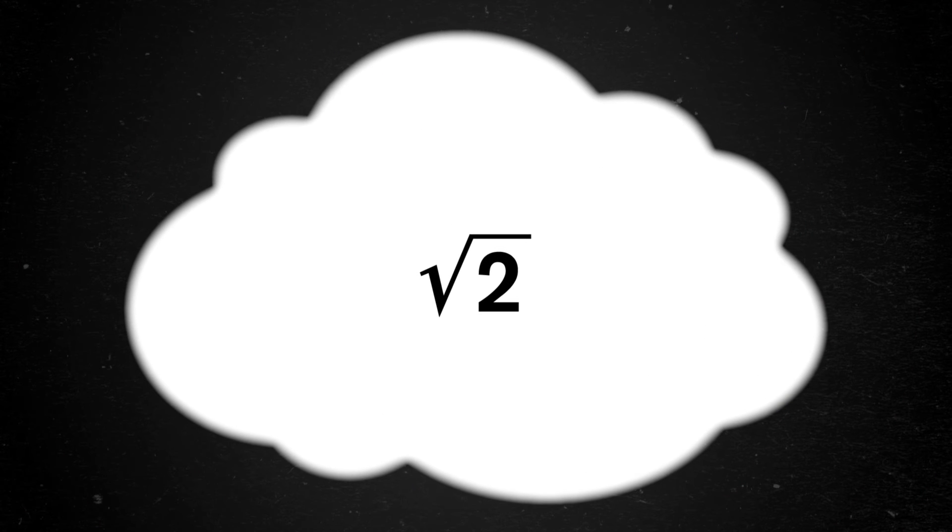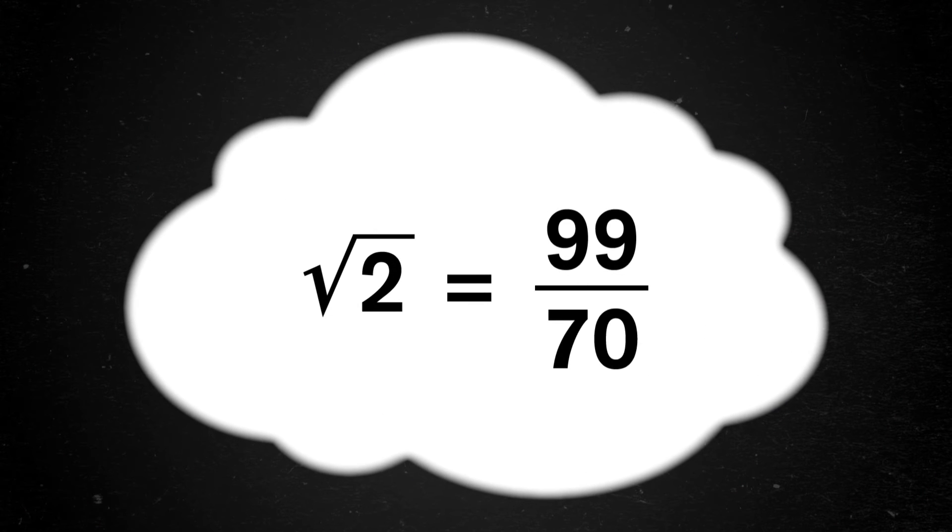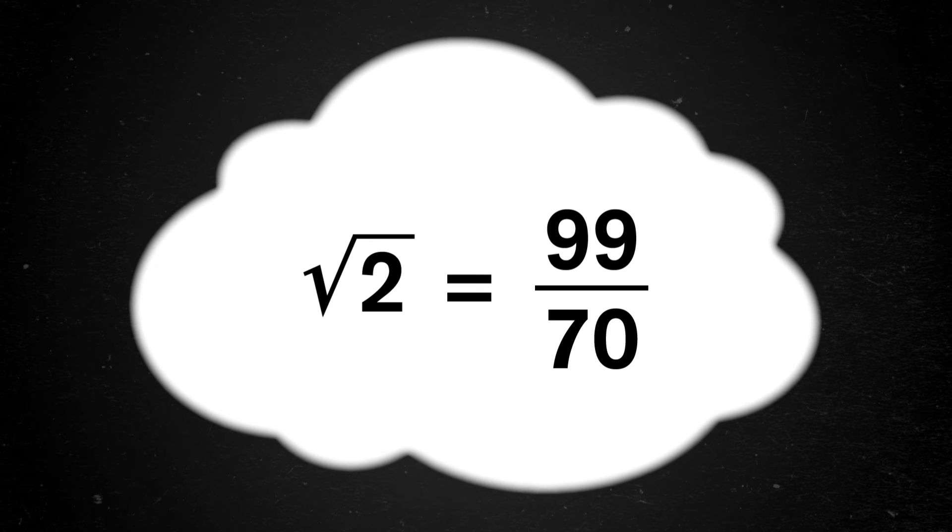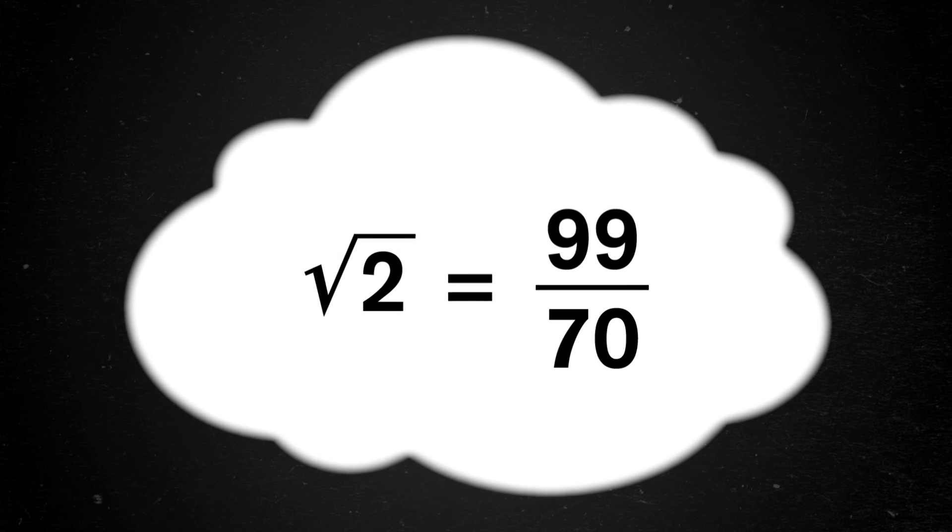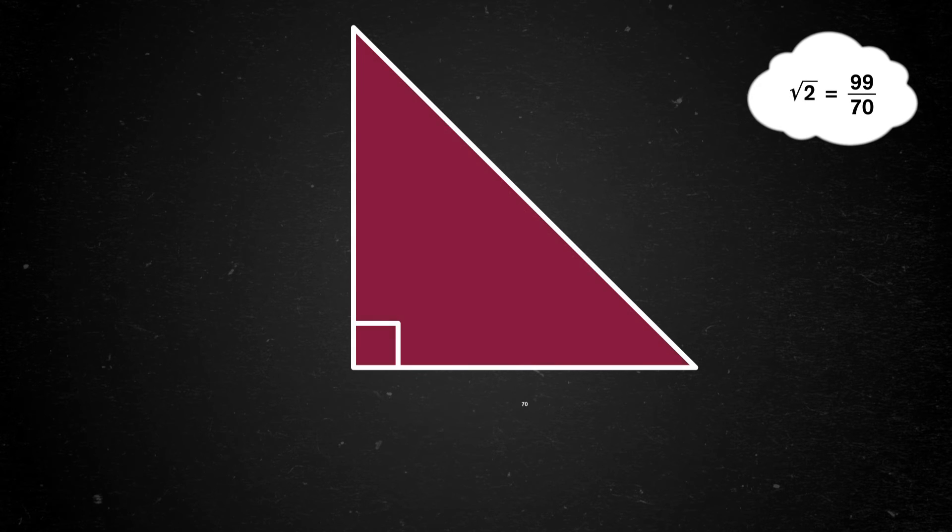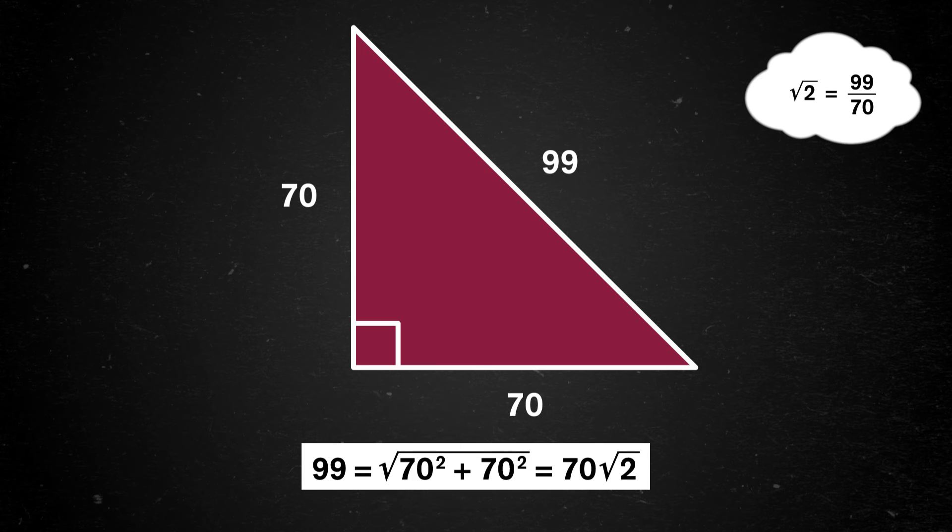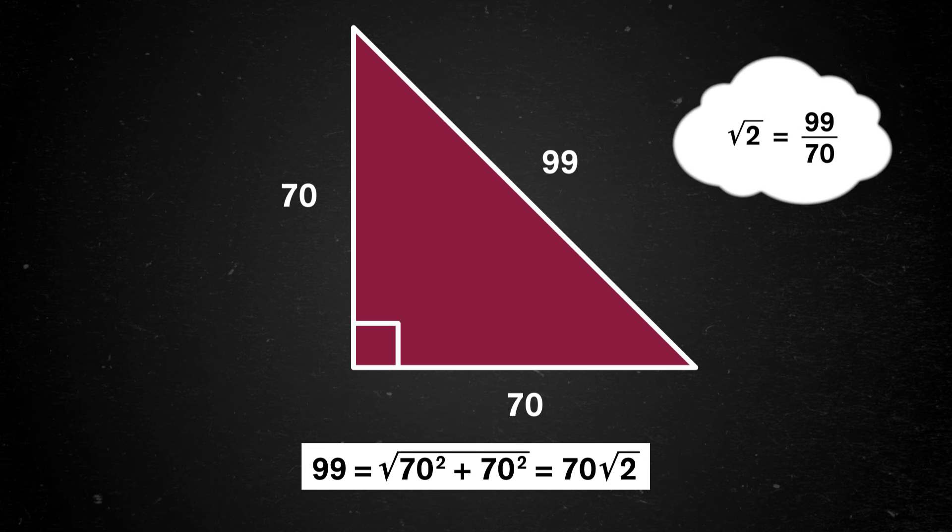Suppose I think that the square root of 2 actually is a fraction, like 99 70ths. Can we prove I'm wrong? Take your fraction, let's use 99 over 70, and make sure it has the smallest possible numerator and denominator. Now draw a right triangle, or a triangle with a 90 degree angle, with two sides of length 70 and a diagonal of length 99. With the Pythagorean theorem, we can see the diagonal equals the square root of 70 squared plus 70 squared, which is 70 times the square root of 2, so 99 70ths is indeed working as our square root of 2.